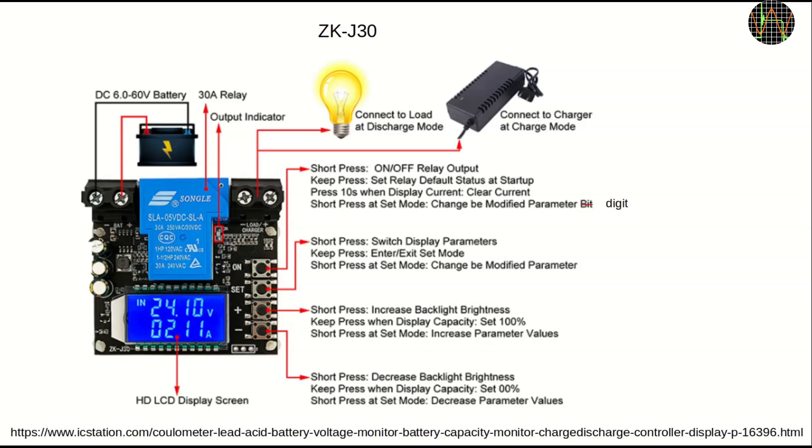It is operated using four tactile switches, all of which have additional functions as you can see. The ON-OFF button turns the relay on or off. The relay connects the battery to the load or charger. Normally the relay is off when power is applied to the module and you need to press the button to connect the battery to either load or charger, but this can be changed so the relay turns on automatically. The other buttons allow you to select what is displayed and to set up parameters.